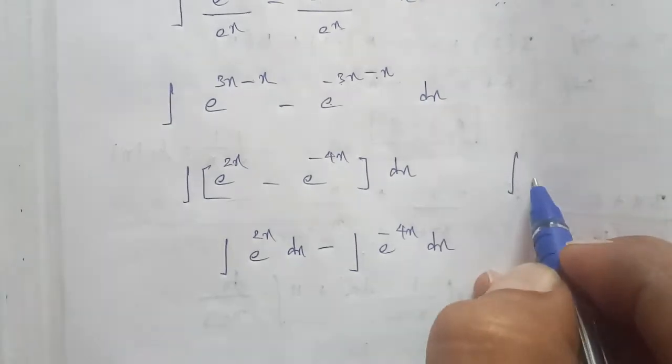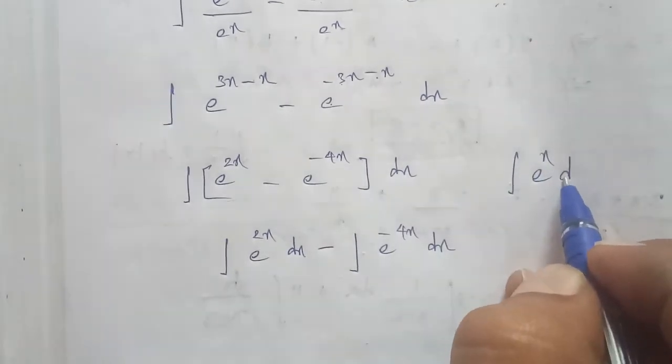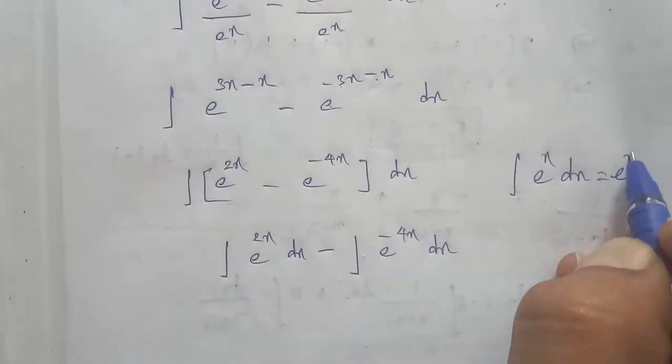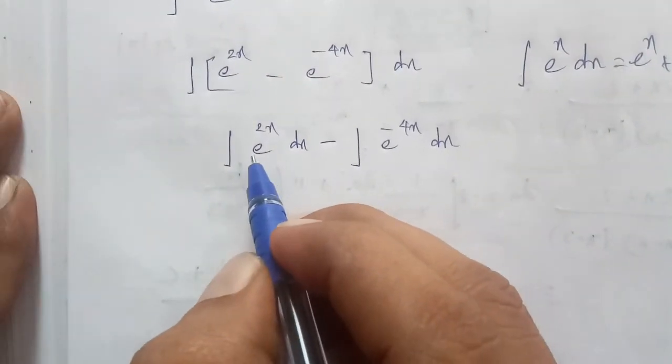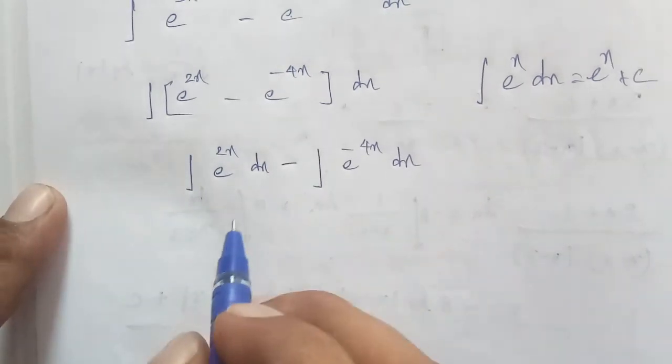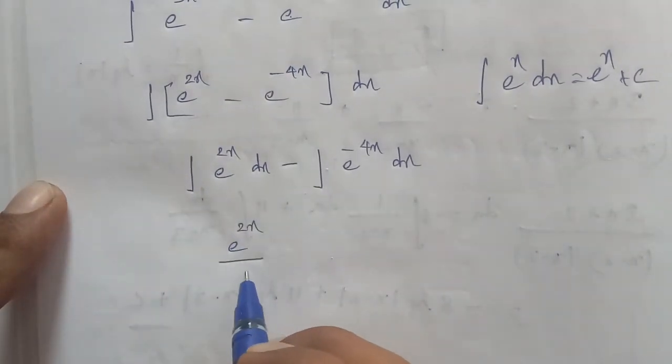The formula is integral of e^x dx = e^x + c. Applying this formula, integral of e^(2x) dx = e^(2x) / 2.